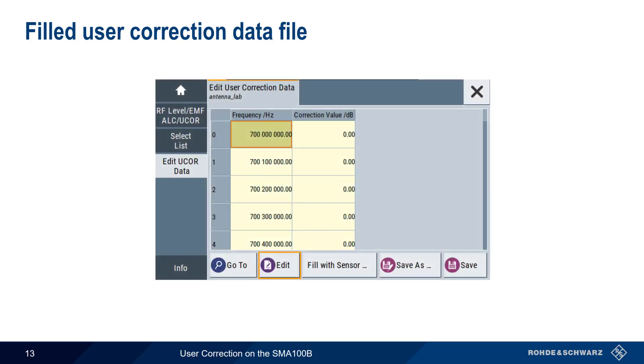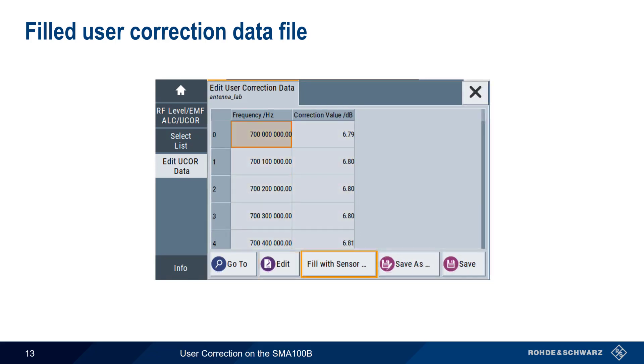Prior to filling from the sensor, we had all zeros in the Correction Value Per dB column, but after running Fill from Sensor, we see the measured values inserted into the table. If necessary, we can click on any one of these values and manually update or edit it.